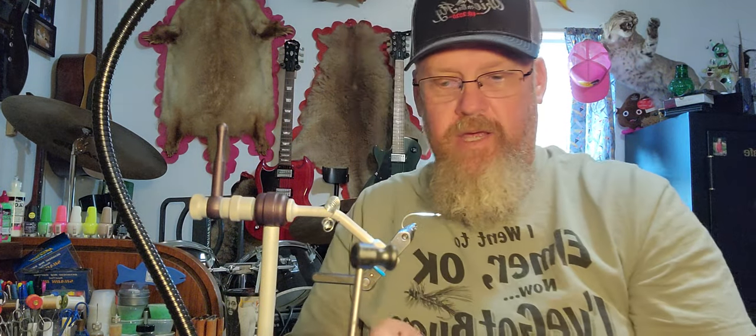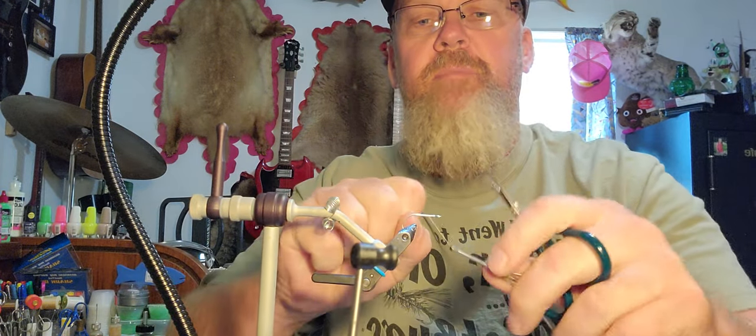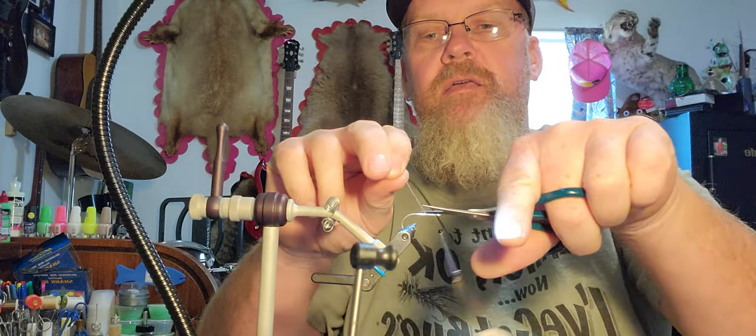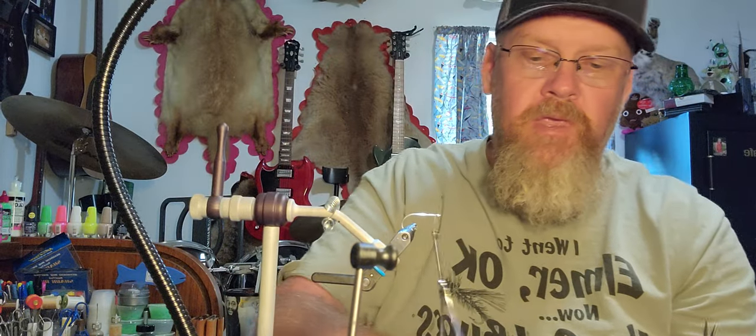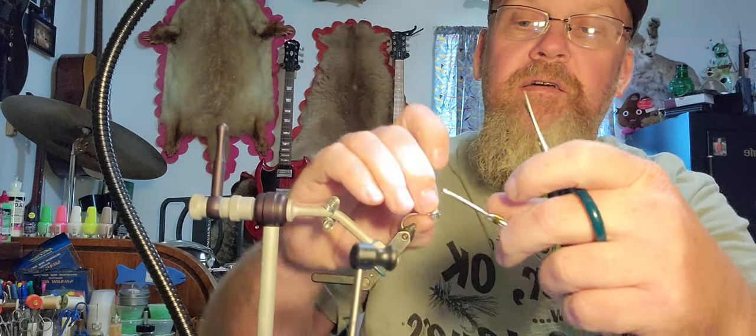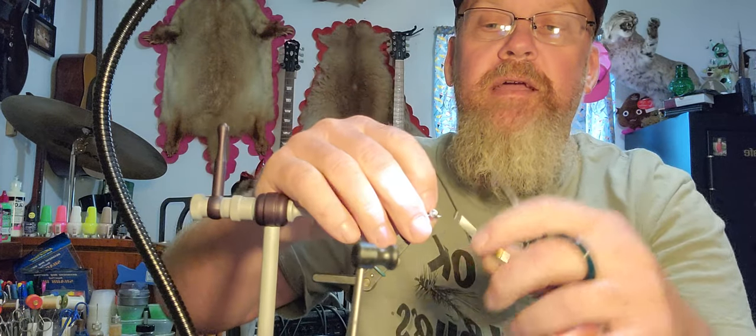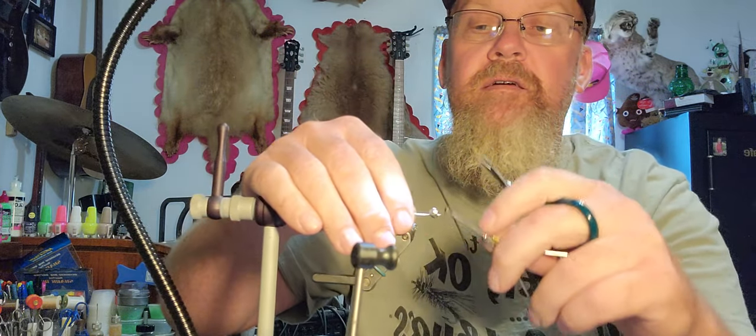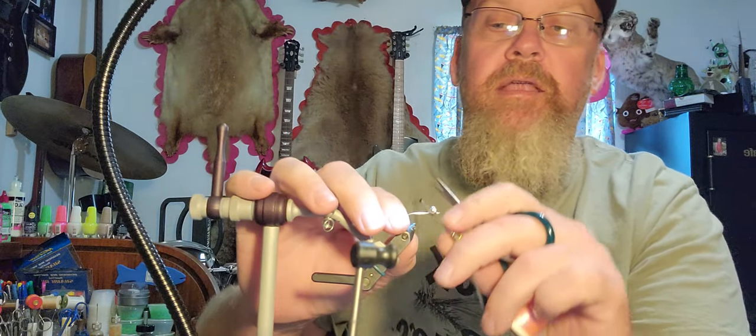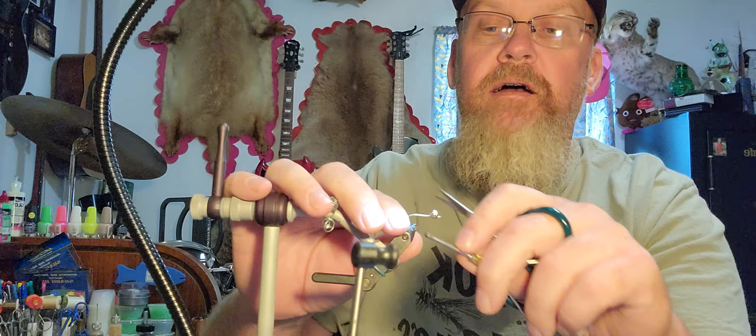Once we get that secured in the vise, we are going to take and secure our eye dumbbells onto the fly. I'm going to get a thread base going. What I always do on a dumbbell is I go one way, go the other way and kind of figure eight.